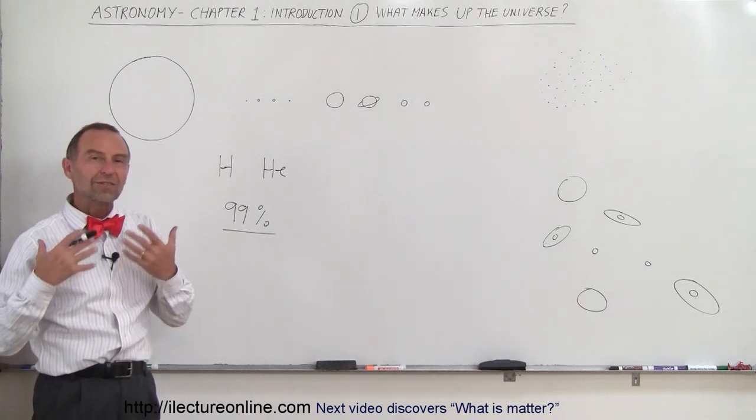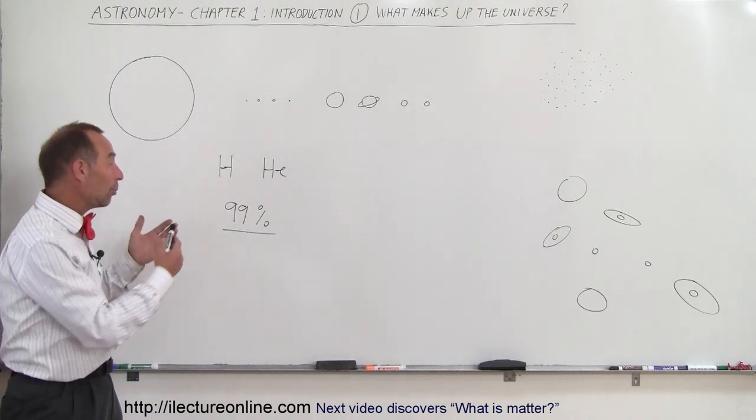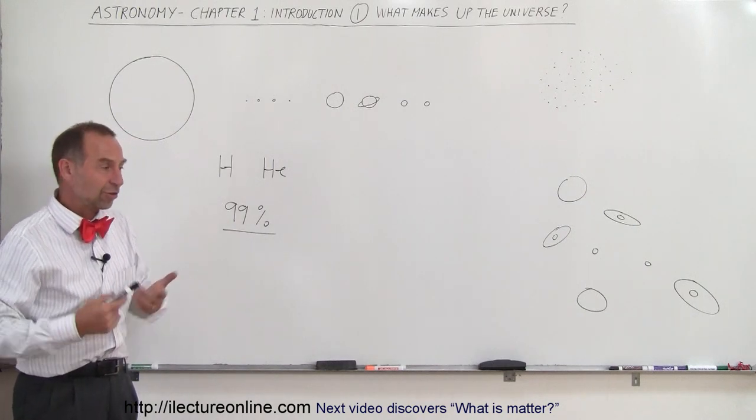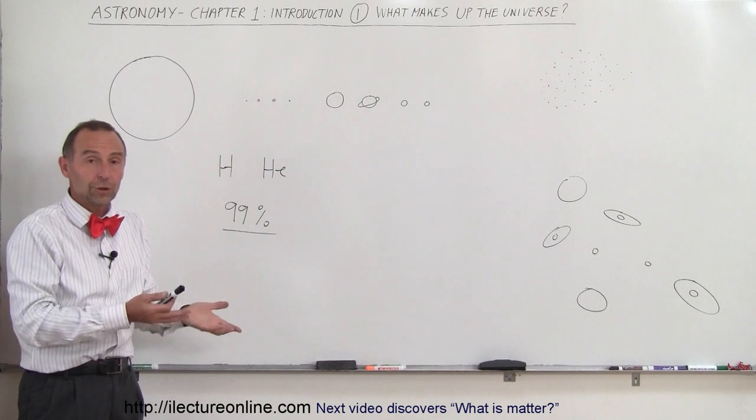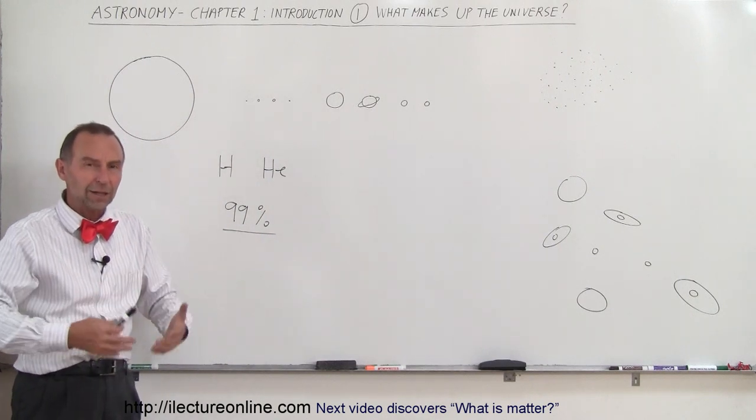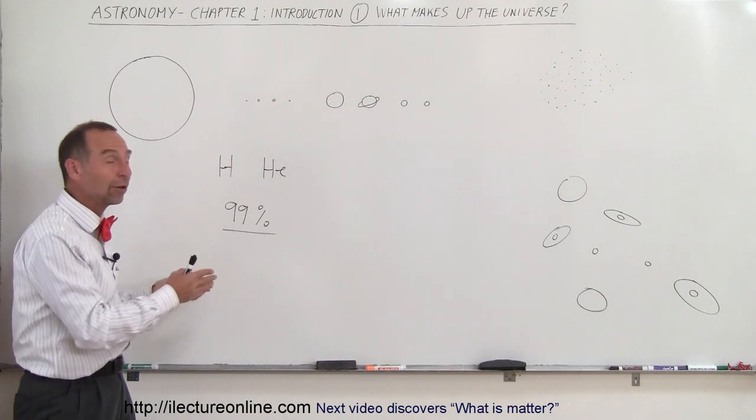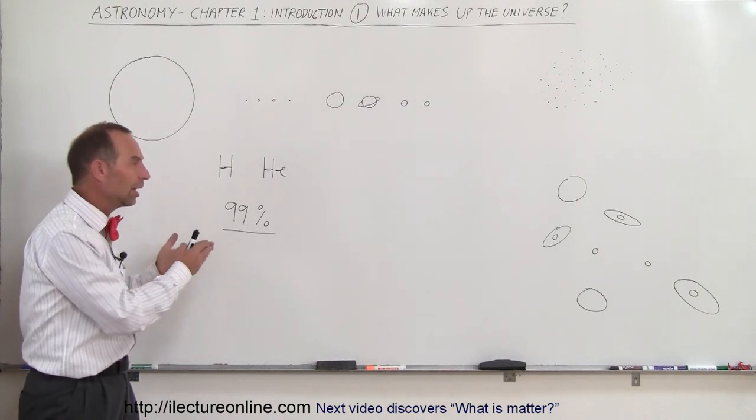From a what-we-can-see perspective, almost all of the matter out there is either hydrogen or helium. Which is very strange, because we live on Earth, and Earth is made up of rock and metal. It's kind of strange to think that the vast majority of the matter in the universe is made up of hydrogen and helium.